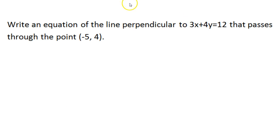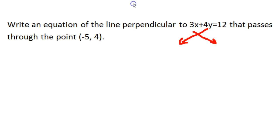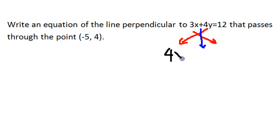So if we do that here, let's swap the coefficients. The 3 that's in front of the x is going to go over here, and the 4 that's in front of the y is going to go over here. And then we're also going to change the sign — in the original equation it's a plus sign, so we're going to change that to a minus sign. When we make all these changes, we'll end up with 4x minus 3y is equal to some number c.